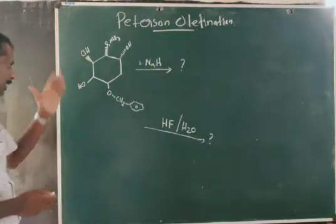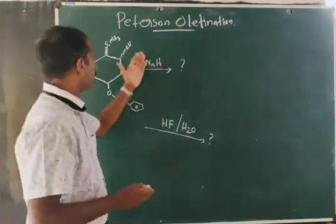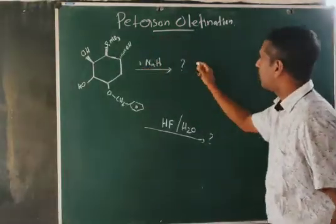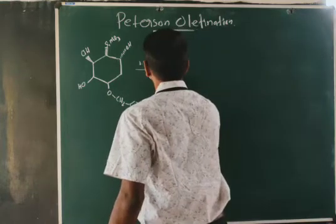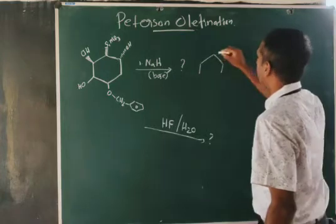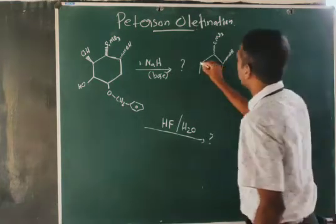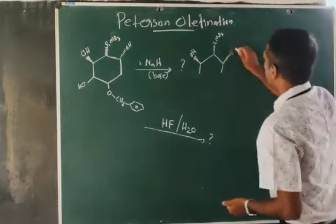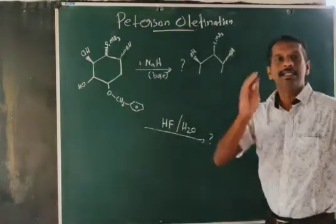This beta-hydroxy silane structure is treated with sodium hydride, which is a base. In the second case, the same compound — beta-hydroxy silane — is treated with acid. You know that when beta-hydroxy silane is treated with a base it will undergo syn elimination. Here, writing the mechanism for the first case: there are two beta-hydroxyl groups, and when treated with a base, syn elimination will occur.